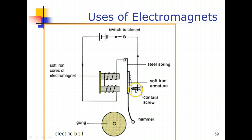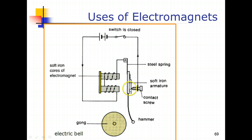Restoring contact completes the circuit again. As current flows once more, the electromagnet remagnetizes, attracting the armature left again to strike the gong, and the contact is broken again. This cycle repeats continuously, producing a series of ringing sounds — ding, ding, ding — until the switch is opened.